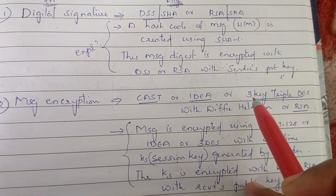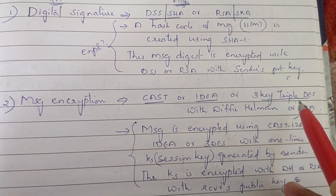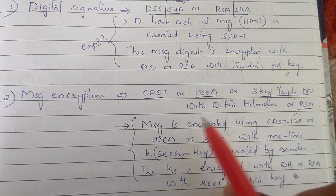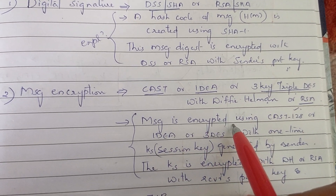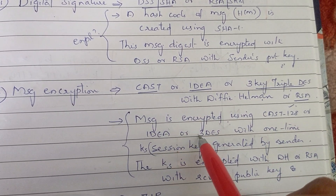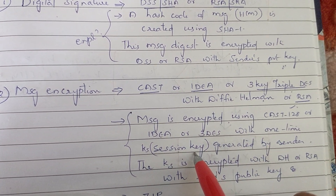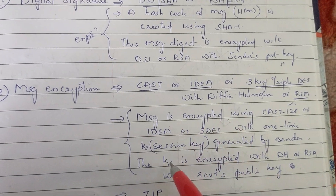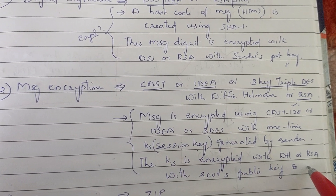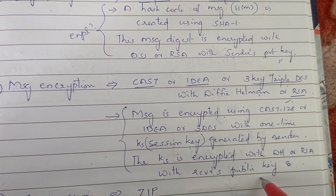For confidentiality, the algorithms used are CAST, IDEA, 3DES, and Diffie-Hellman — specifically 3DES with Diffie-Hellman or RSA. The message is encrypted using CAST-128, IDEA, or 3DES with a one-time session key. Then the session key is encrypted using RSA with the receiver's public key.